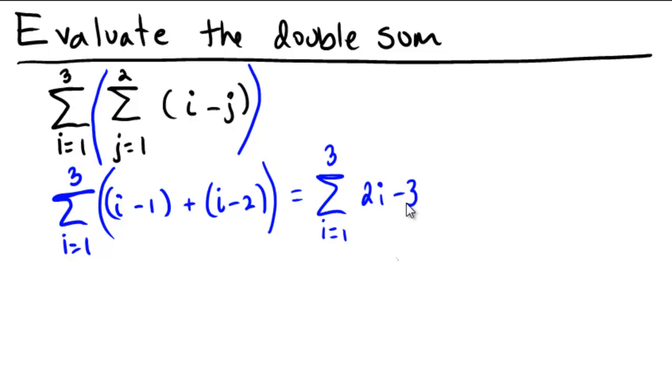And now we can do the outer summation. So for the outer summation, we're now going to interpret the i marching from 1 to 3. So if we were to replace i with 1, we'd have 2 times 1, which is 2, minus 3, which is negative 1.